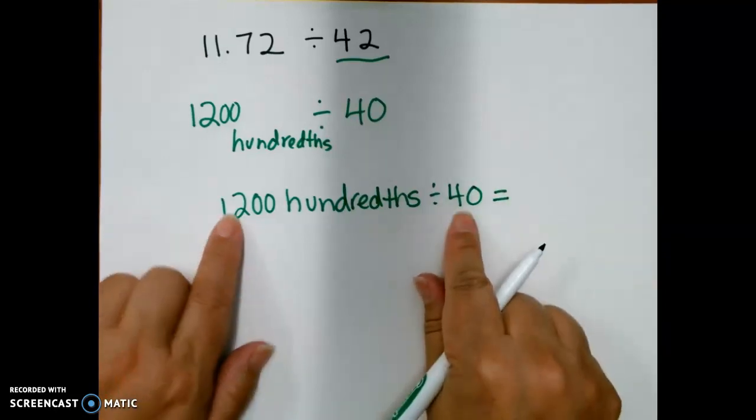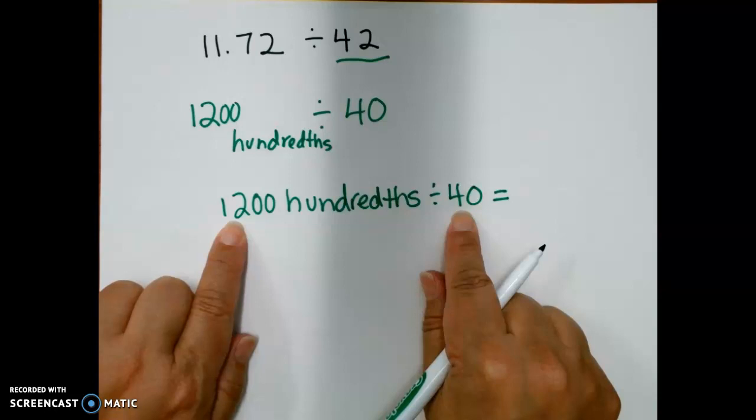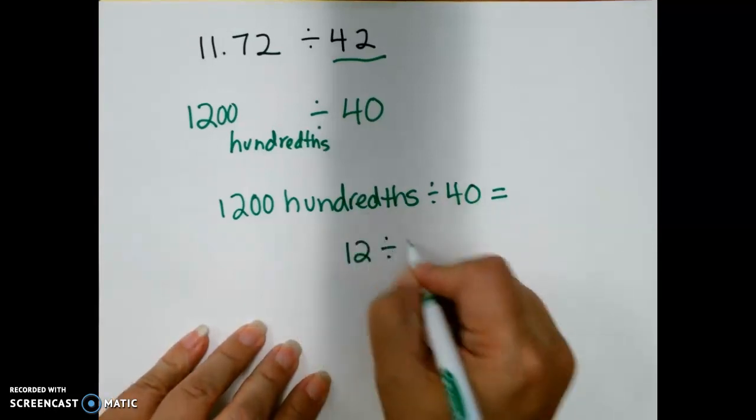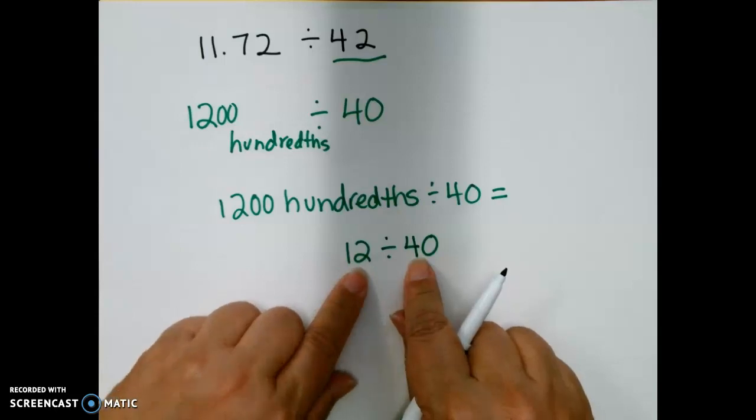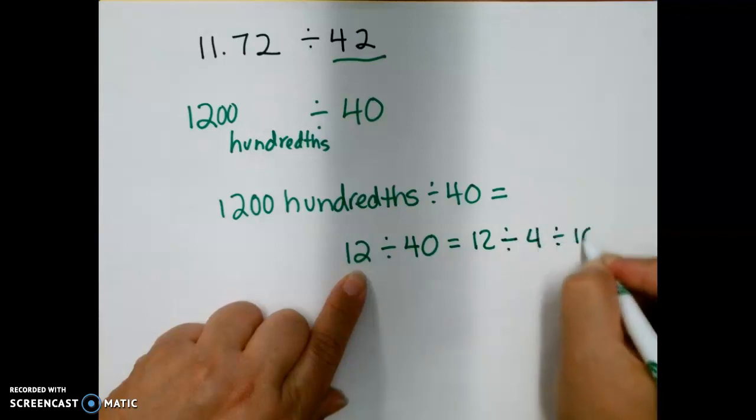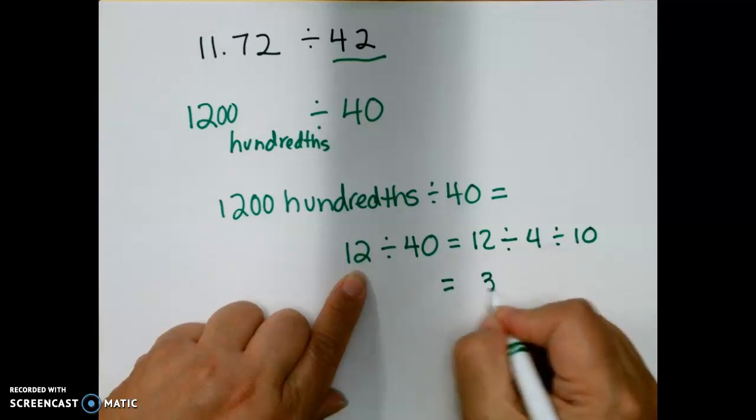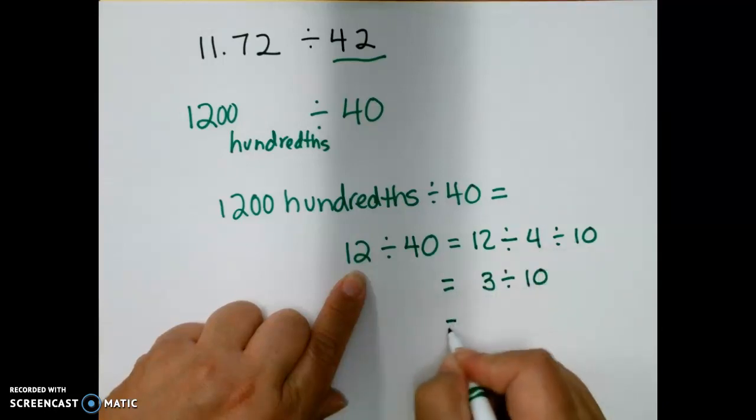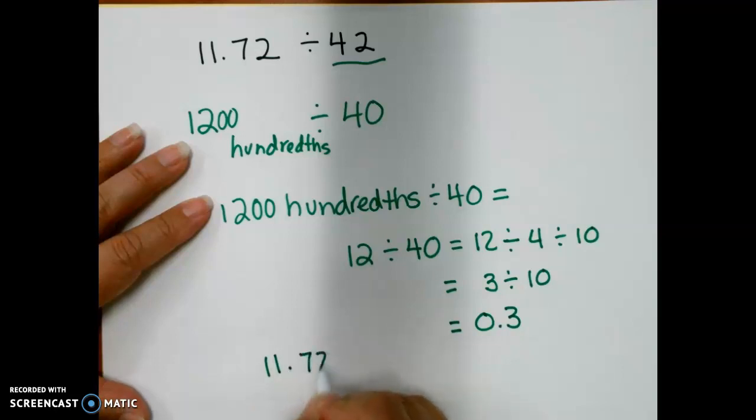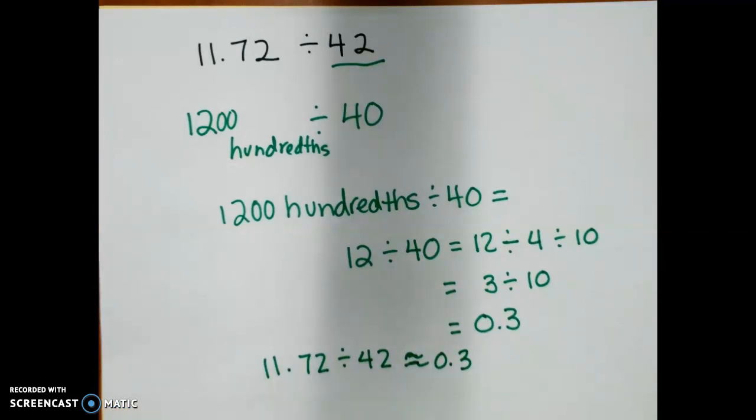Well, I know that I could say 1200 hundredths is equal to 12, and if I divide 12 by 40, this is equal to 12 divided by 4 divided by 10. 12 divided by 4 is 3, and we divide that by 10, and that equals 3 tenths. So 11.72 divided by 42 is about 3 tenths. I know this might be a little confusing. Just do the best you can on the problem set, and let me know if you have any questions.